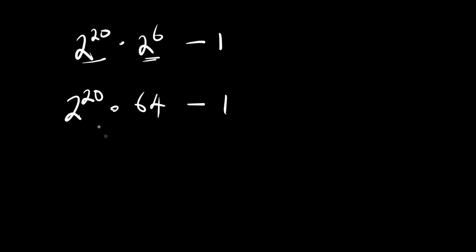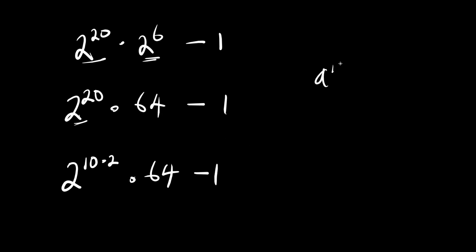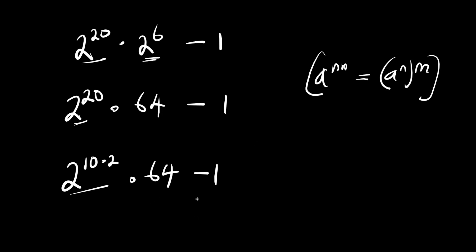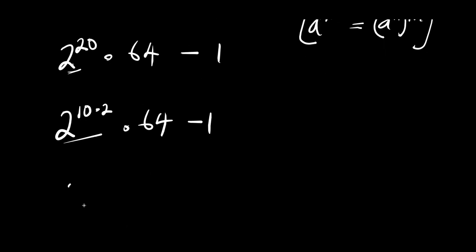We also need to find the value of 2 to the power of 20, which is simply 2 to the power of 10 times 2 to the power of 10, times 64, minus 1. Now if you have a to the power of n times a to the power of n, that equals a to the power of n raised to the power of 2.